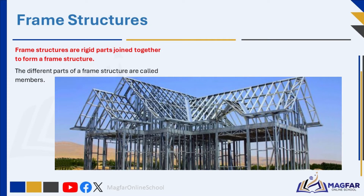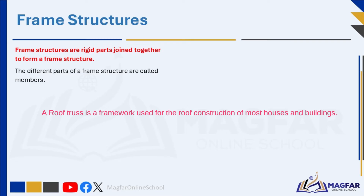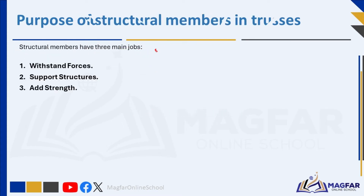Many roofs are supported by frame structures called trusses. A roof truss is a framework used for the roof construction of most houses and buildings — it is a base that supports the roof timbers and roof coverings. Trusses can be made of wood or steel, and the different parts of a truss are called members. The purposes of the different structural members vary, as each member is designed for a specific purpose.